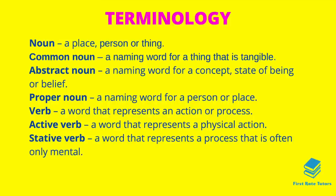When it comes to language terminology, the first is nouns. A noun is a person, place, or thing, but there are different categories. A common noun is a naming word for something tangible — you can touch it, taste it, see it, feel it, such as a table or a chair. An abstract noun is a naming word for a concept, state of being, or belief, such as faith or philosophy. A proper noun is a naming word for a person or place, always written with a capital letter, such as London, Paris, New York, or America.